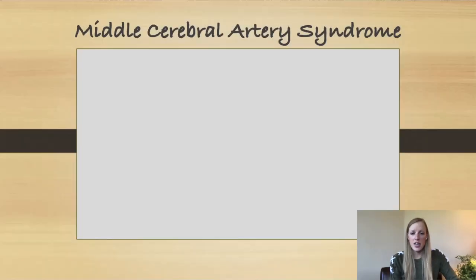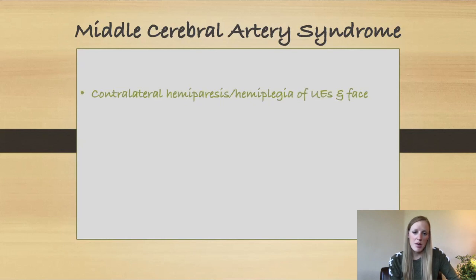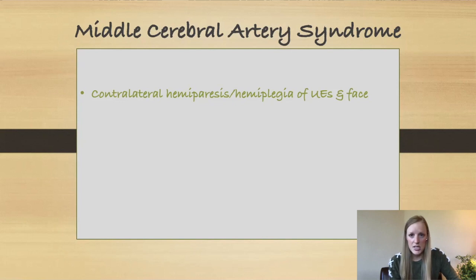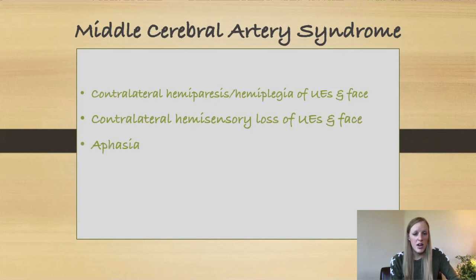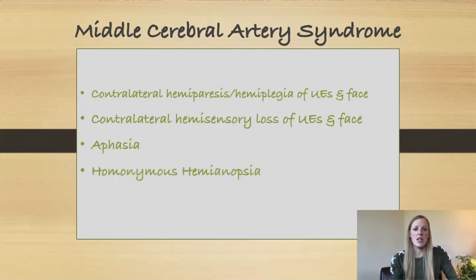There are still a few key symptoms that we tend to pair with the middle cerebral artery. We could see contralateral hemiparesis and hemiplegia — in this case the upper extremities and face are more affected than the lower extremities. We could also see contralateral hemisensory loss, again with the upper extremities and face more affected. We could see aphasia, we could see something called homonymous hemianopsia, and we can also see some hemi neglect.